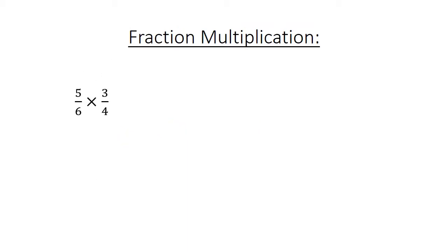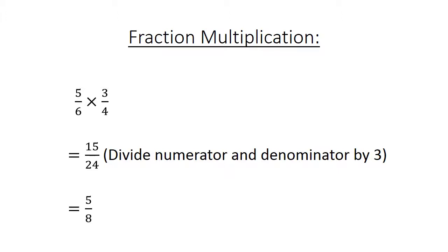Fraction multiplication: 5 over 6 times 3 over 4 equals 15 over 24. Now divide your numerator, the top one, and the denominator, the bottom one, by 3. We simplify: 5 over 8.